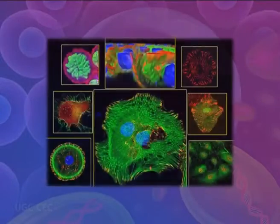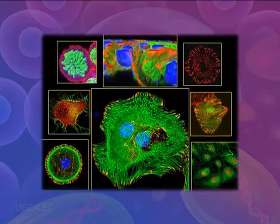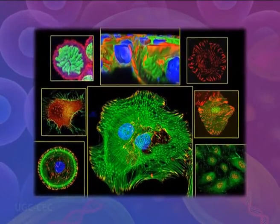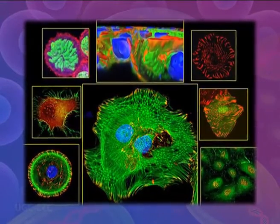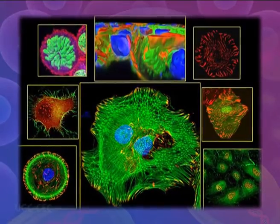Cells are the basic units of the structure and function of living things. They are the smallest units that can carry out the processes of life. All organisms are made up of one or more cells, and all cells have many of the same structures and carry out the same basic life processes. Knowing the structures of cells and the processes they provide is necessary information to understanding life itself.